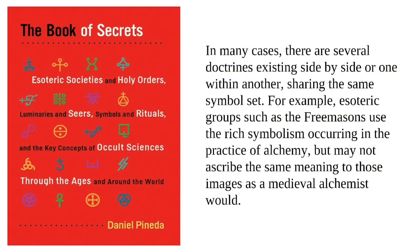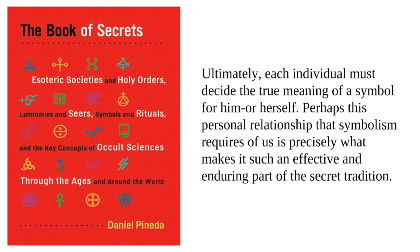In many cases, there are several doctrines existing side by side, or one within another, sharing the same symbol set. For example, esoteric groups such as the Freemasons use the rich symbolism occurring in the practice of alchemy, but may not ascribe the same meaning to those images as a medieval alchemist would. Ultimately, each individual must decide the true meaning of a symbol for him or herself. Perhaps this personal relationship that symbolism requires of us is precisely what makes it such an effective and enduring part of the secret tradition.